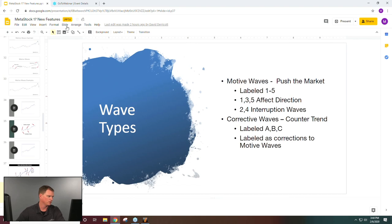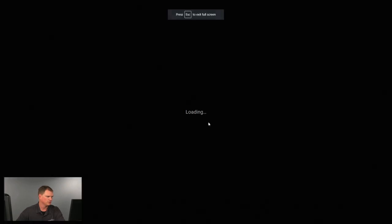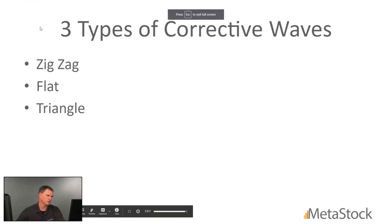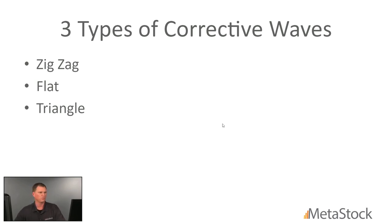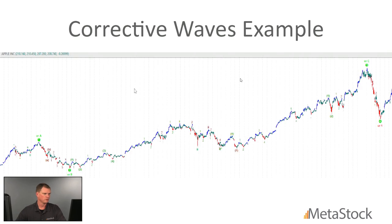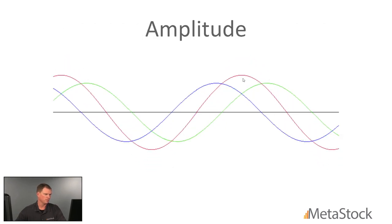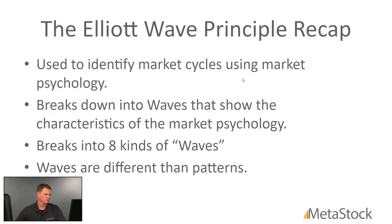Corrective waves include three types: zigzags, flats, and triangles — all available inside MetaStock. You don't have to use the provided template; you can create your own and apply the Elliott Wave expert system, since all indicators are labeled and start with 'Elliott Wave' followed by the speed designation — Fast, Normal, or Slow. You can also scan for waves using the Explorer and read results as: first number is which wave, second number is how many bars ago.